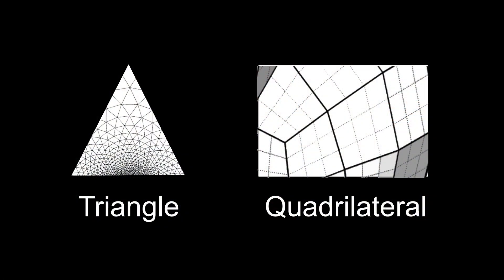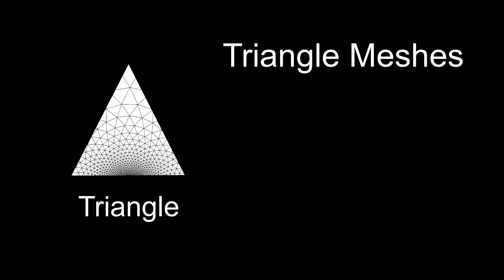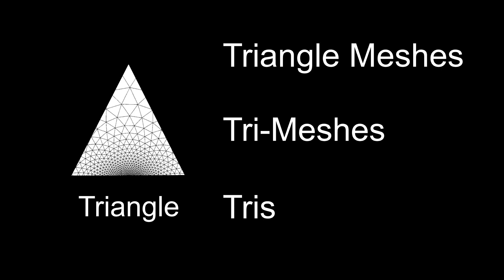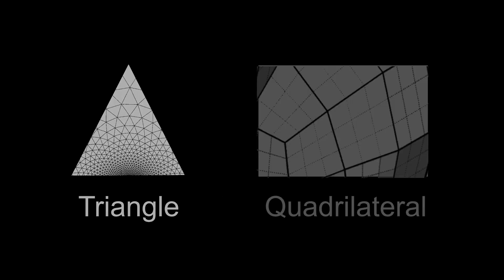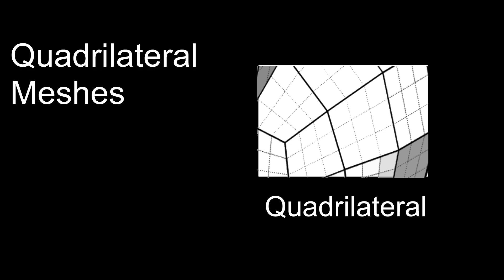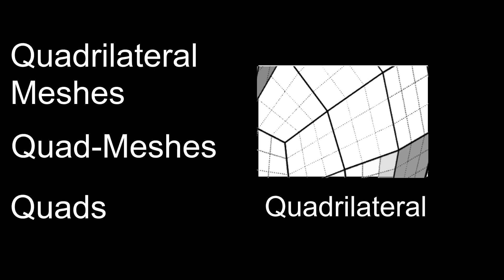There are basically two types of face shapes that are commonly used to construct 3D meshes: the triangle shape and the quadrilateral shape. Meshes made with triangle faces are commonly referred to as triangle meshes, trimeshes, or simply tris. Meshes made with quadrilateral faces are commonly referred to as quadrilateral meshes, quad meshes, or simply quads.